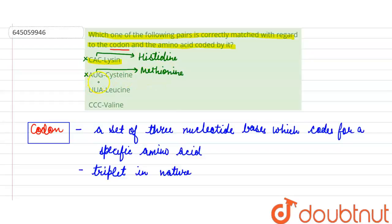Now the third option is UUA which codes for leucine. So this option is correct.